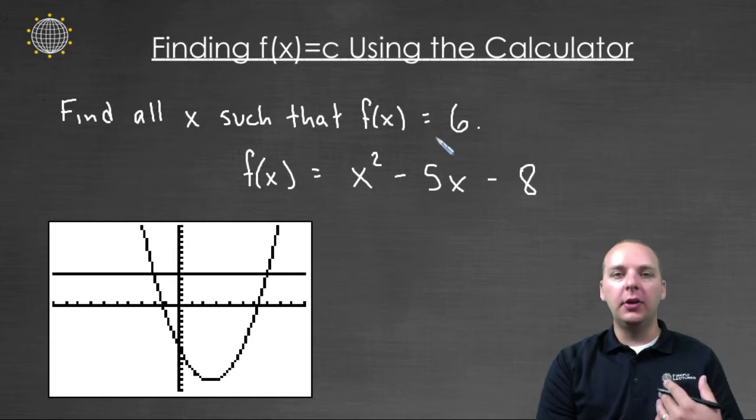You remember in our earlier videos, much earlier in the class, we talked about horizontal lines and vertical lines. And if you have y equals a constant, it's a horizontal line where y is always six.